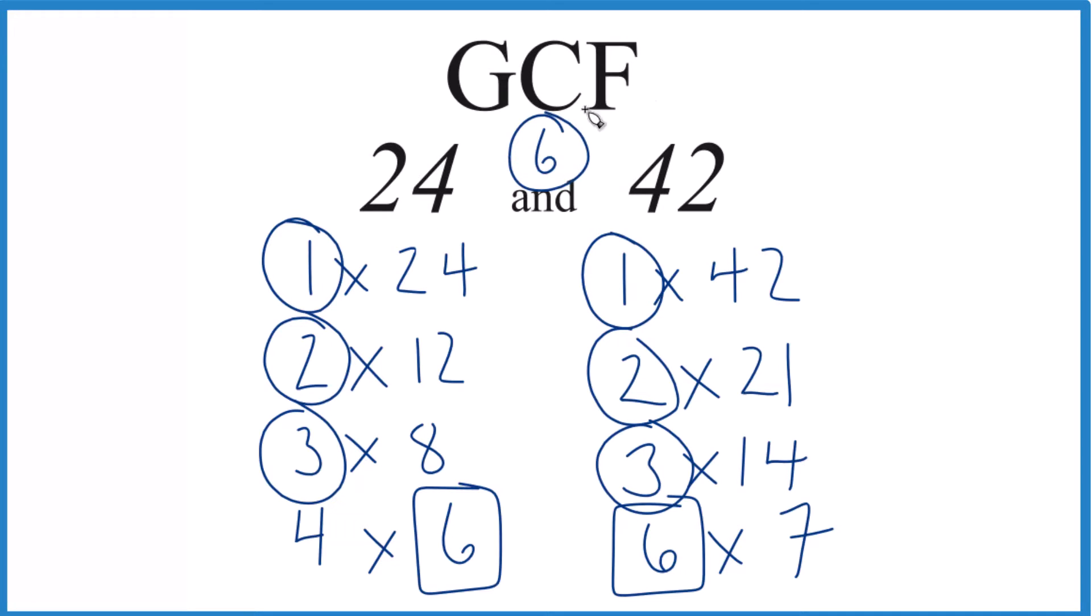So in answer to our question, the GCF for 24 and 42 is 6. You could use other methods like prime factorization—they work—but for smaller numbers like this, this is usually a pretty good method. Dr. B, thanks for watching.